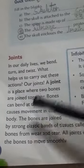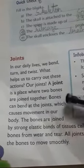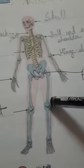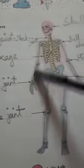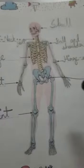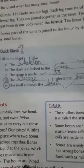A joint is a place where two bones meet. In the skeletal system we can see joints such as the elbow joint, neck joint, knee joint, and wrist joint — wherever two bones meet, that place is called a joint. We have many joints in our body. Bones can bend at the joints, which causes movement in our body.